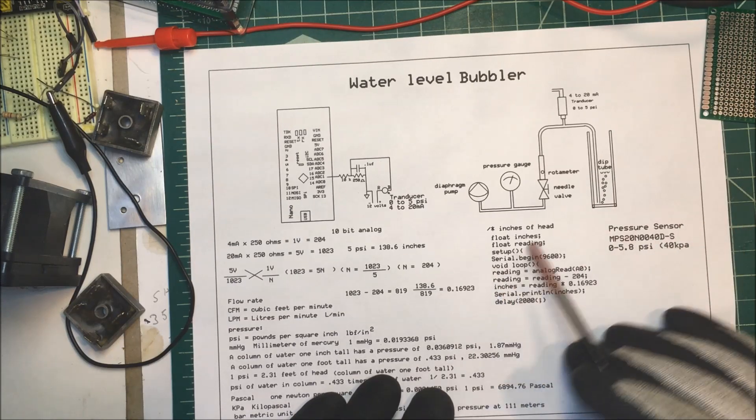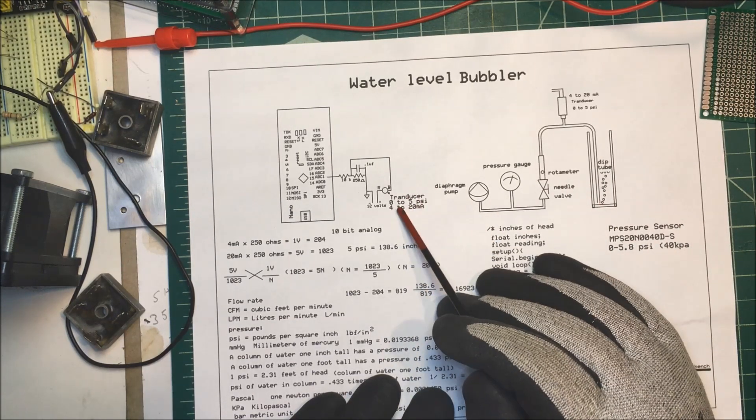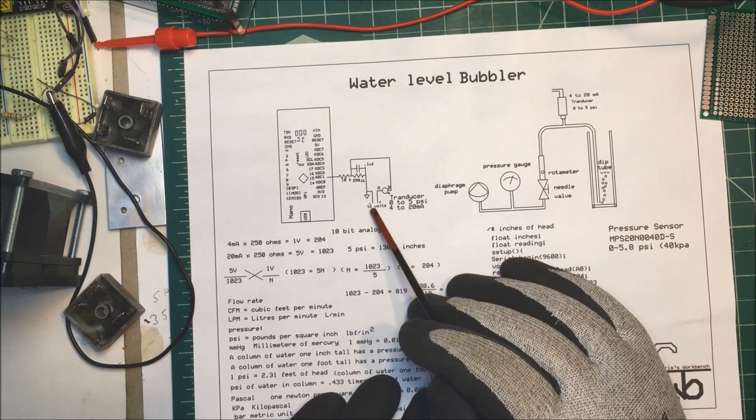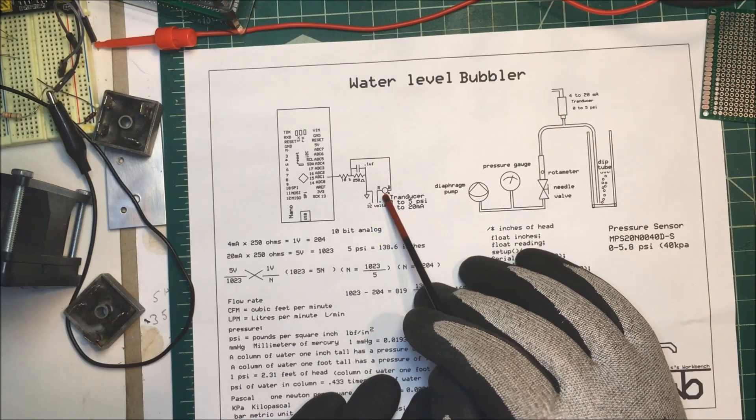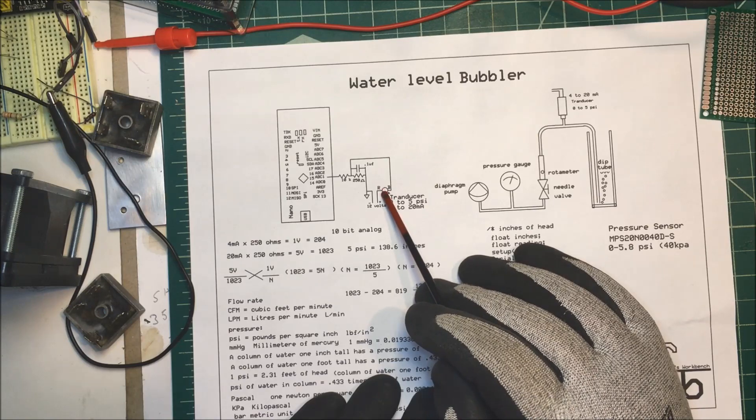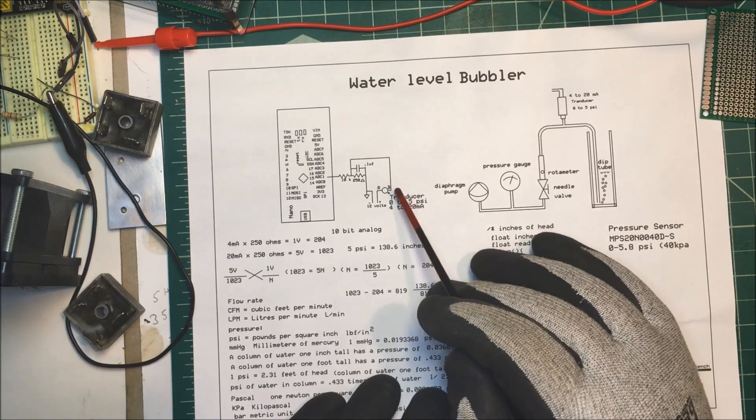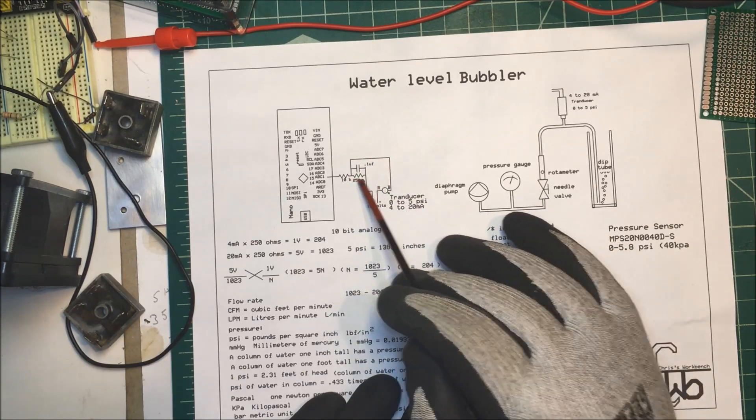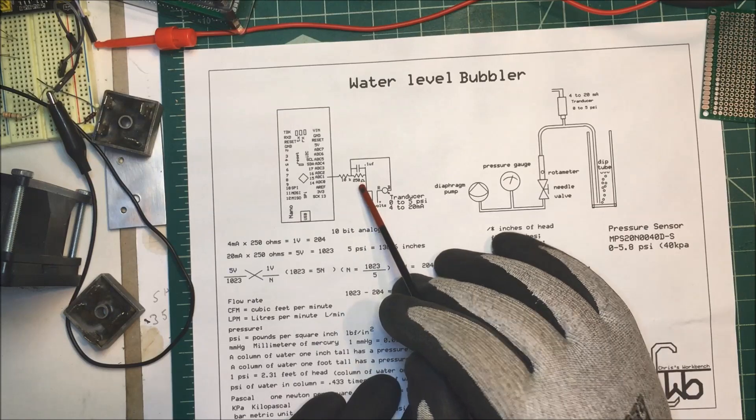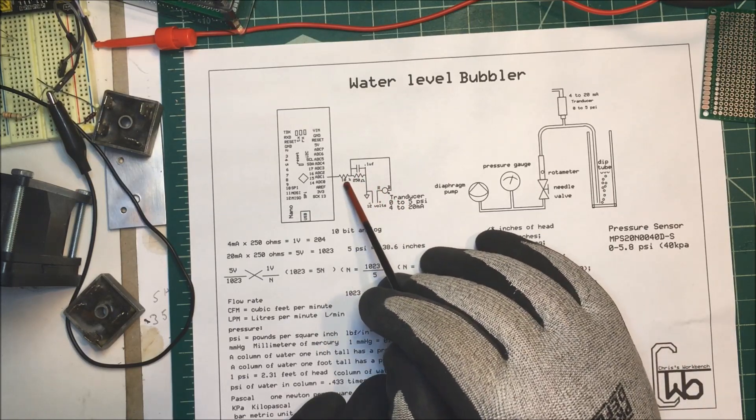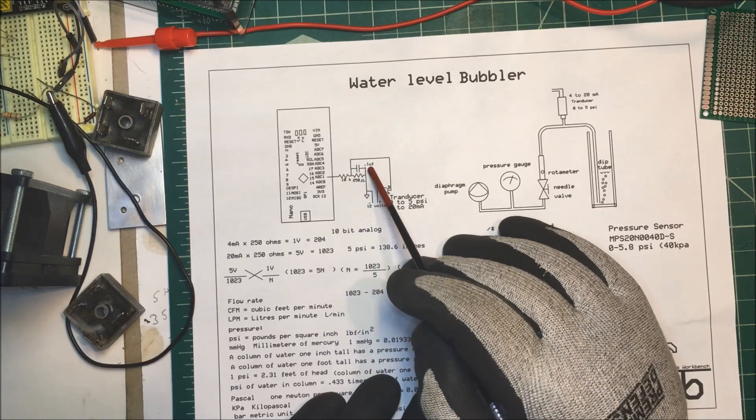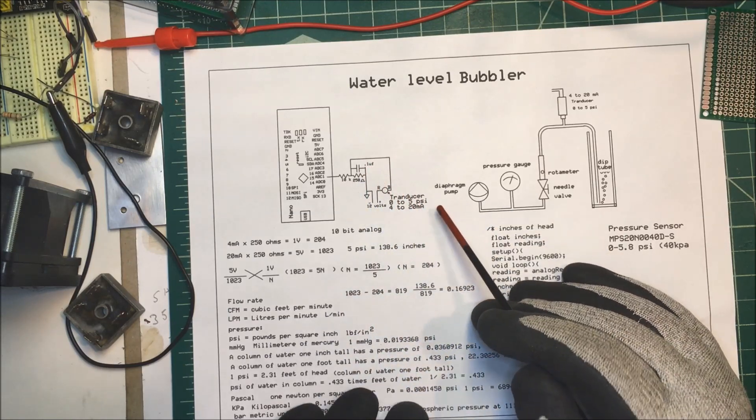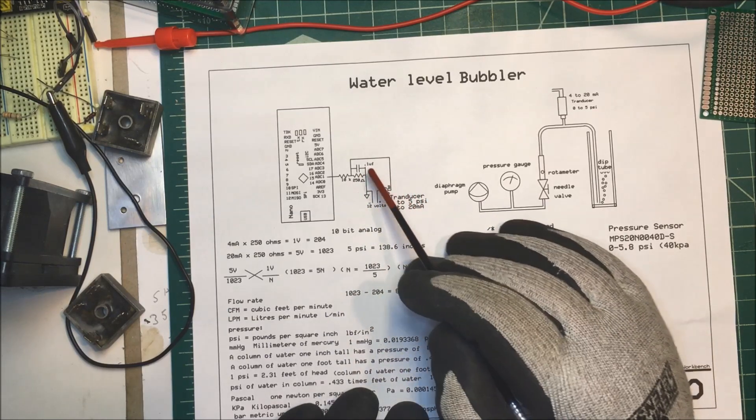Now, for our transducer over here, these run off of 12 volts. So I'm putting 12 volts into the positive, into the red lead on the transducer. And then out of the other side of the transducer, I go across the 250 ohm resistor here. And then we have a 10k here just to limit the current and a little capacitor across there just to smooth it out a bit.